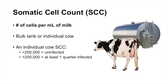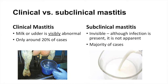A dairy cow has four quarters, and at any one time she can have one, two, three, four, or no quarters infected with mastitis. Mastitis can be characterized into two types: clinical or subclinical. Clinical mastitis refers to animals where you can visibly see the abnormalities — the udder feels hot to the touch, there are visible changes in milk production from infected quarters, and we often see redness or swelling. Clinical mastitis accounts for approximately 20% of all cases. We're most concerned about subclinical mastitis, which accounts for 80% of cases — animals we cannot visually identify as infected, yet they are putting high somatic cell counts into the bulk tank.